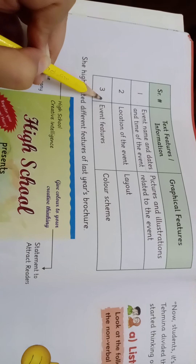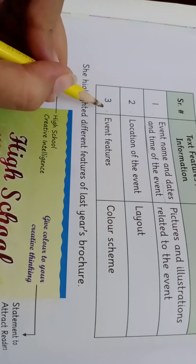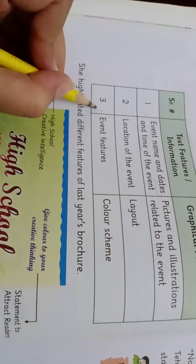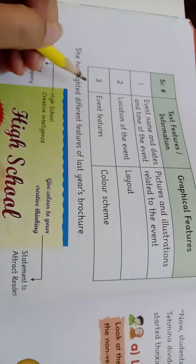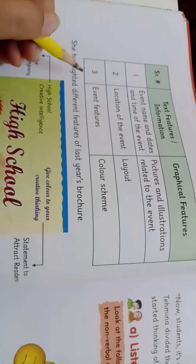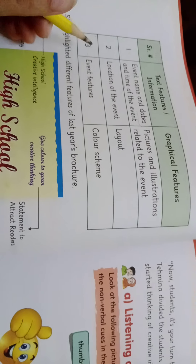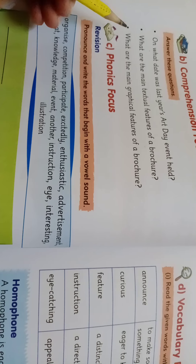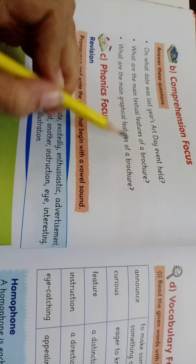Event features are also part of the textual features — these tell us how many age groups of children the event is for, who can participate and who cannot participate. All of these details come under event features.